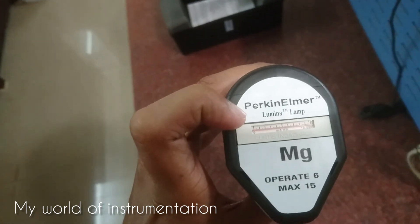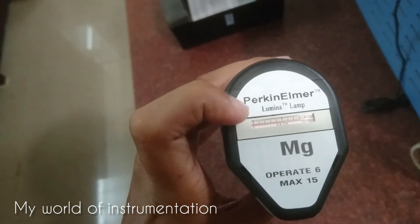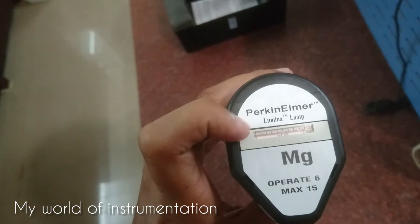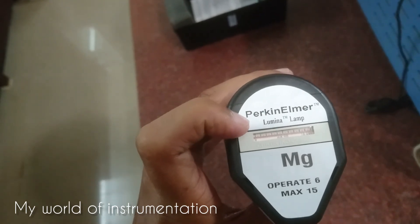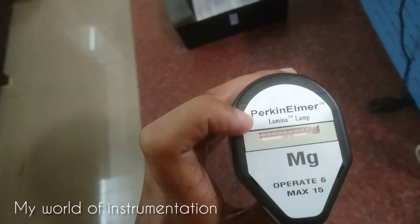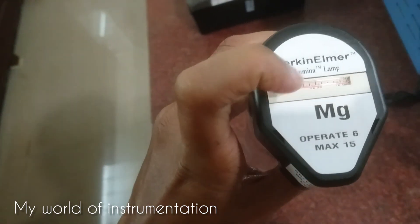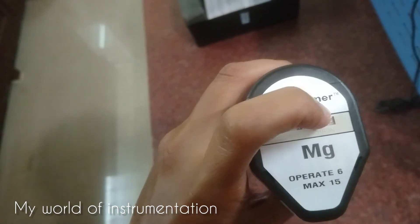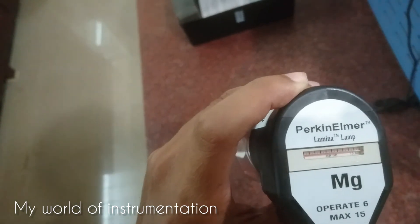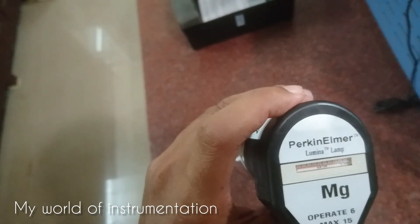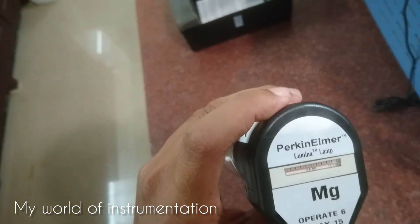This is a hollow cathode lamp milliampere hour meter. This meter measures the number of milliampere hours that your lamp has operated. The range of the meter is from zero to 10,000 milliampere hours. This information will assist you in determining when to replace a lamp.